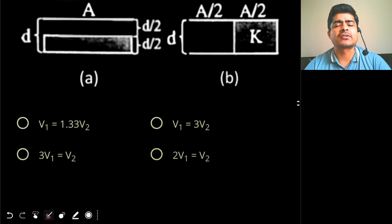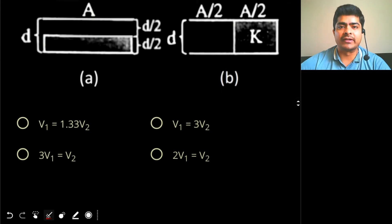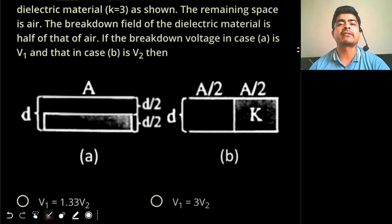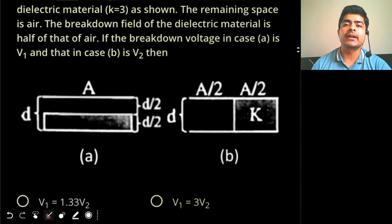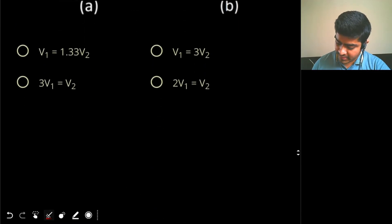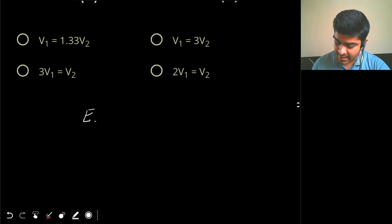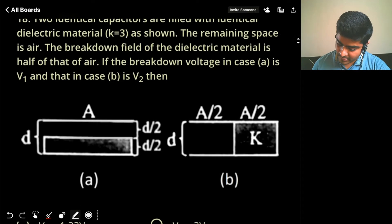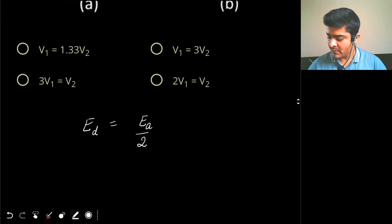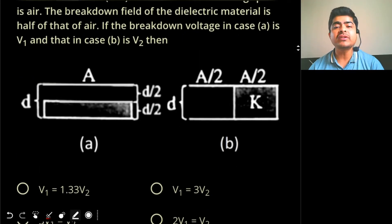To solve this, you have to apply the concept of dielectric breakdown strength, which is essentially about the electric field. Draw and write down the breakdown electric field in both cases, then compare in which case the voltage produced by that electric field will be greater or smaller. The breakdown field of the dielectric is given as half that of air: E_D = E_air / 2.